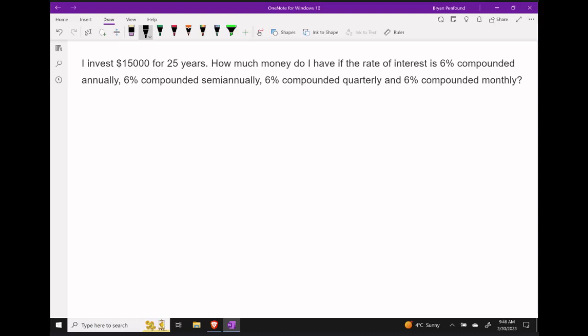Let's suppose that we invest $15,000 for 25 years. Let's try to figure out our future value under a couple of different circumstances. First, what's our future value if interest is 6% compounded annually?